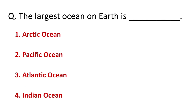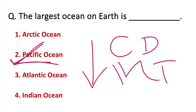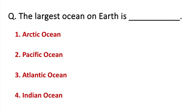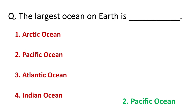The largest ocean on Earth is the Pacific Ocean. Its deepest point is Challenger Deep, located in the Mariana Trench. The second largest is the Atlantic Ocean, the third is the Indian Ocean, the fourth is the Southern Ocean, and the Pacific is the first. The correct answer is Pacific Ocean. The Indian Ocean's deepest point is the Java Trench.